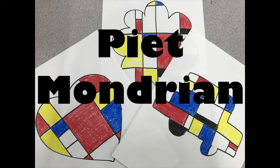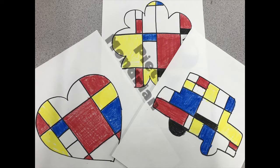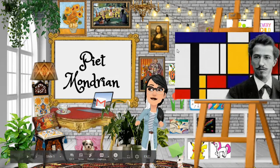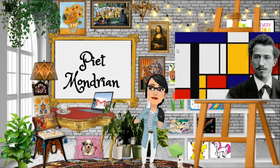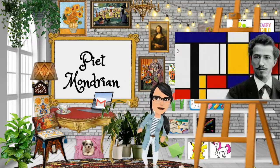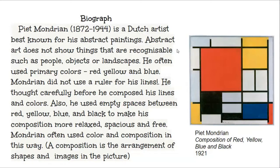Today, we will learn about Piet Mondrian. Piet Mondrian is a Dutch artist best known for his abstract paintings. He was born in 1872 and he died in 1944.